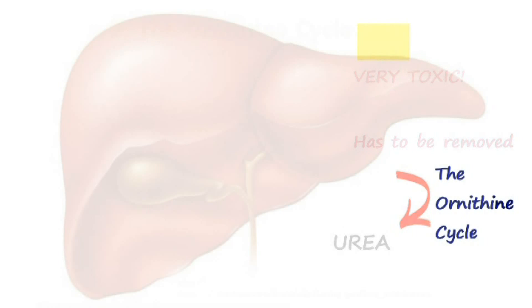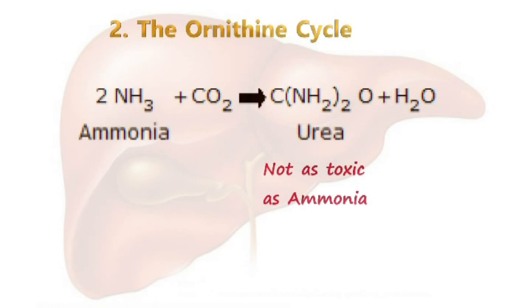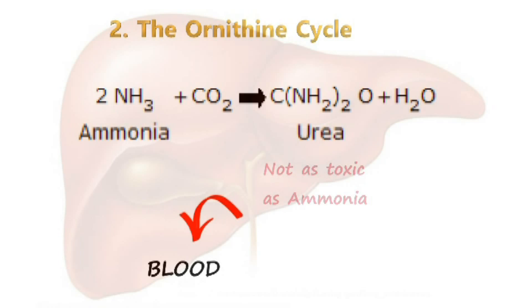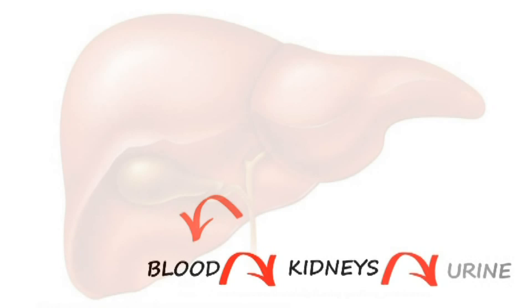Let's now take a look at the ornithine cycle. Here, the ammonia is combined with carbon dioxide, producing urea as seen in this equation. The urea produced is still toxic, but it's not as dangerous as the ammonia, and it's also less soluble. The liver releases the urea into the blood, and it's then dissolved in blood plasma to be transported all over the body. Upon reaching the kidneys, it finally passes out as urea.